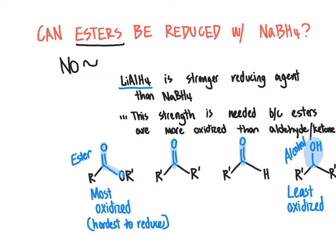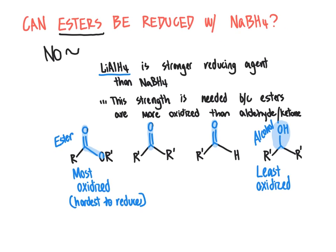The other question we can ask is, could we reduce esters using hydrogen and a metal catalyst? The answer to that is no. Esters cannot be reduced with hydrogen and a metal catalyst. Hydrogen and a metal catalyst only reduces carbon-carbon double bonds and carbon-carbon triple bonds. It can't reduce any aldehydes, ketones, or other things that have carbonyl groups.